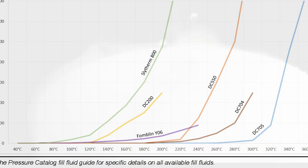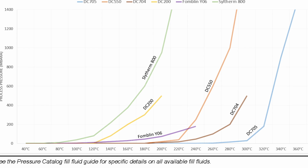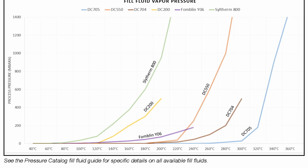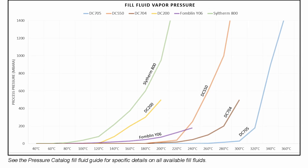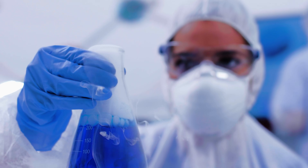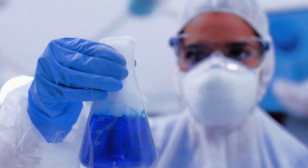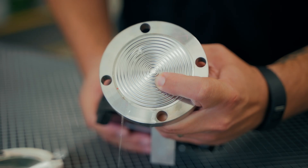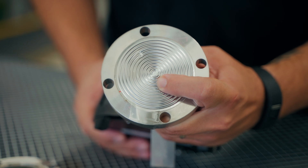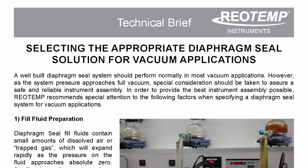If operating in vacuum or at high temperatures near atmospheric pressure, it is important to consider the vapor pressure of the fill fluid. If process conditions force the fill fluid to phase change into a gas, permanent damage could result in either the diaphragm seal or the measuring instrument.